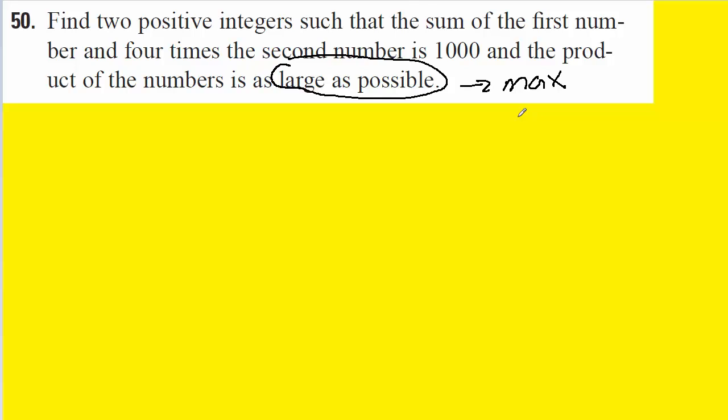Let's find the constraint equation first. That's going to come from the opening words of the sentence, which tells us that the sum of the first number and four times the second number is 1,000. We can let x equal the first number and y equal the second number.